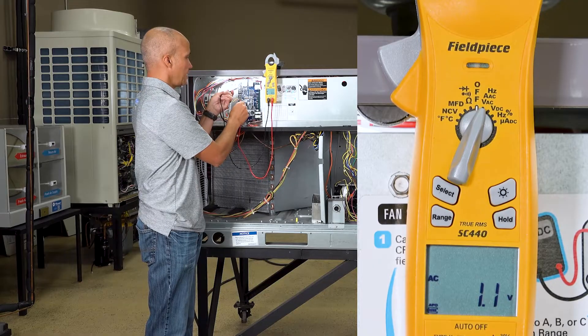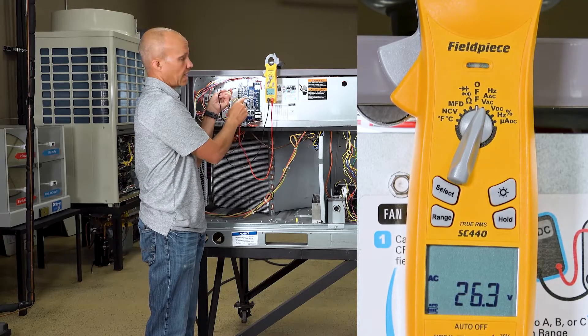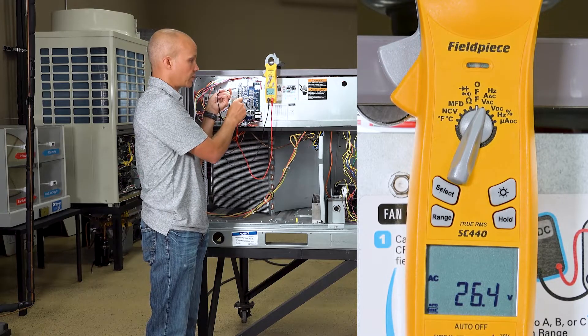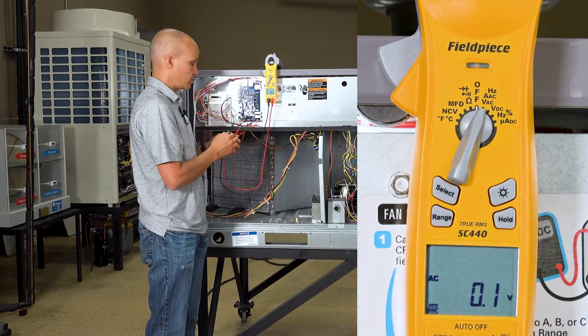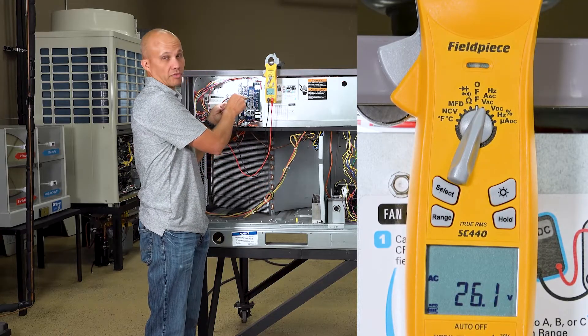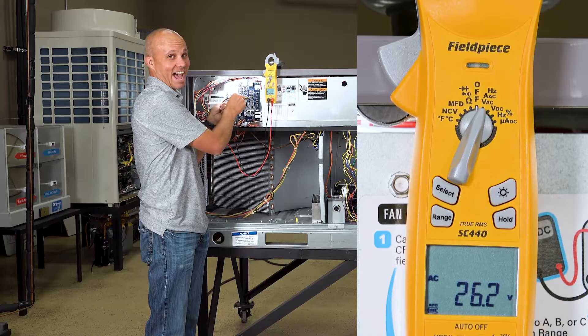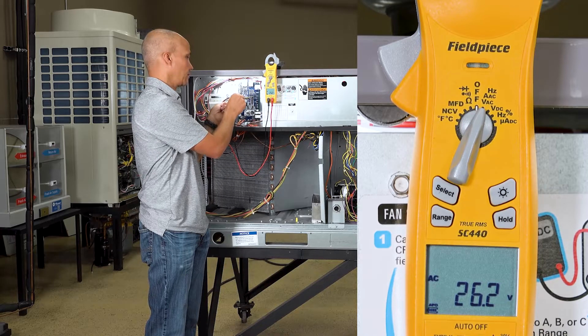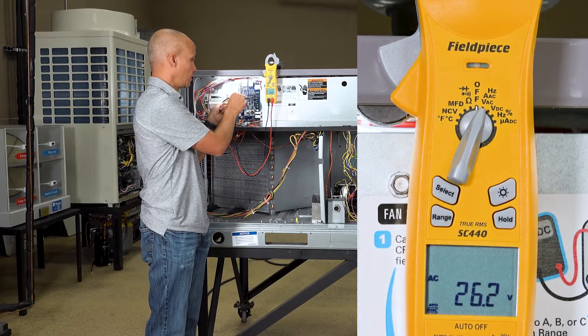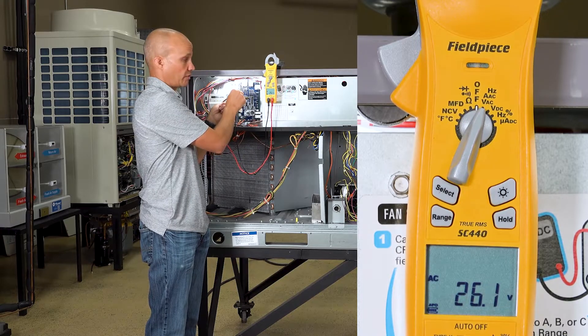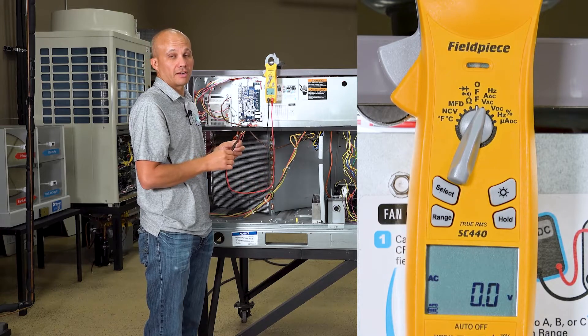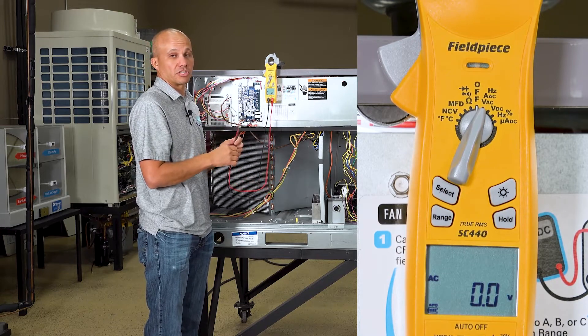The first thing I want to do right now is just to make sure I have power in general. So I'm going to go on red, R and C common. I have 26.3 volts. I'm looking for 24 volts plus or minus 15 percent. So I'm good. So now if I go to red and yellow I also have 24 volts. That means the stat is not calling for cooling. If I go to red and white heating, 24 volts, no call for heating. Red and green, 24 volts, no call for fan. Let's go downstairs and create a call for fan and we'll come back up here and measure this again so you can see the difference.